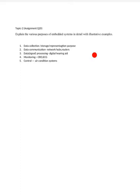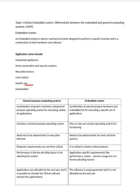This question was asked for 10 marks in the model question paper and previous question papers. I suggest changing assignment question number 20 to: 'Define embedded system and differentiate between the embedded system and general computing system,' because this is a very important question.